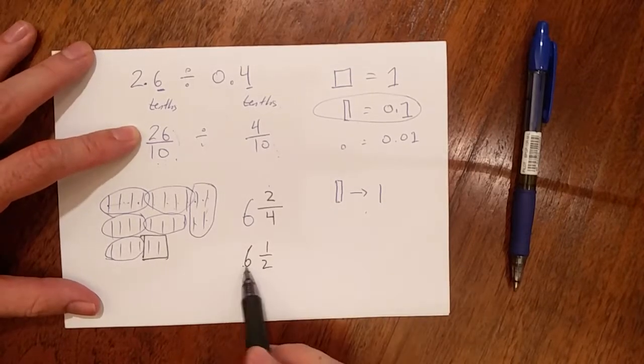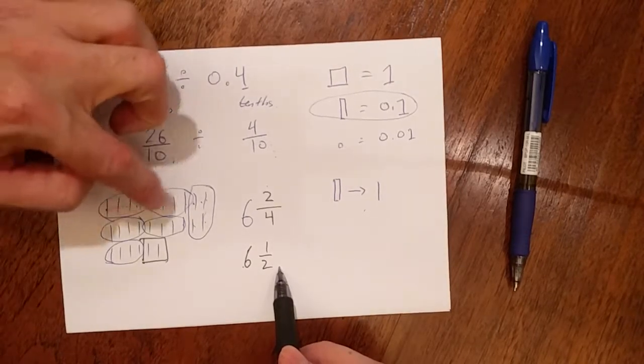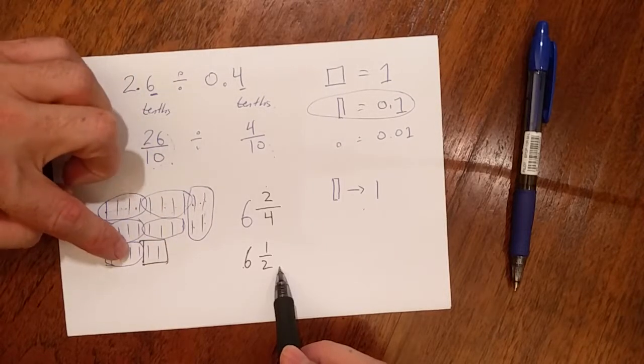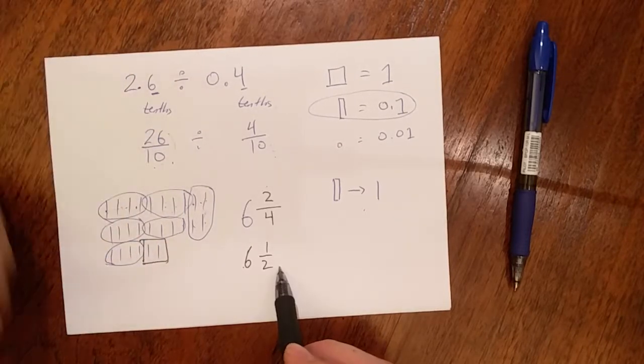Okay, so I have six and a half groups. Look at one, two, three, four, five, six, and half a whole group. Six and a half groups.